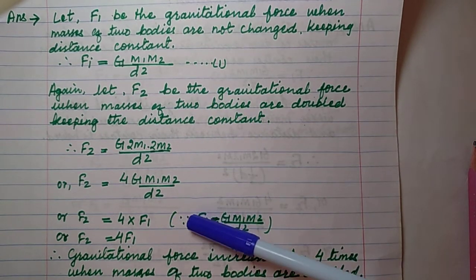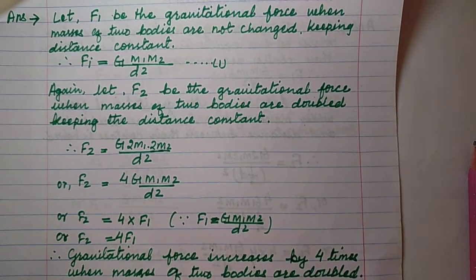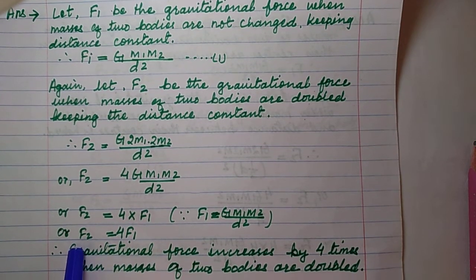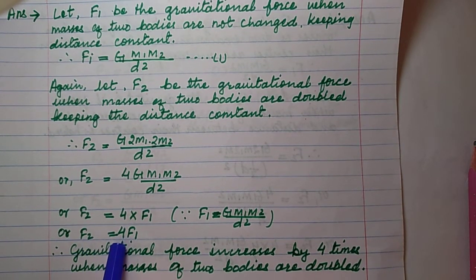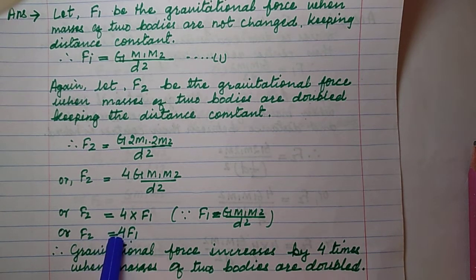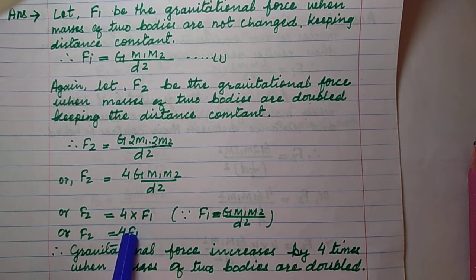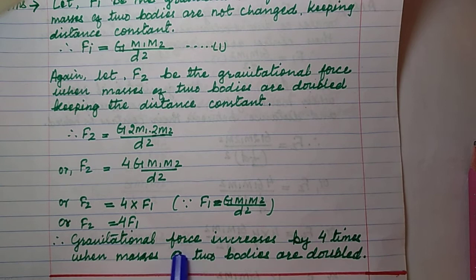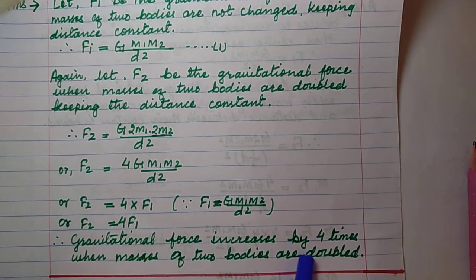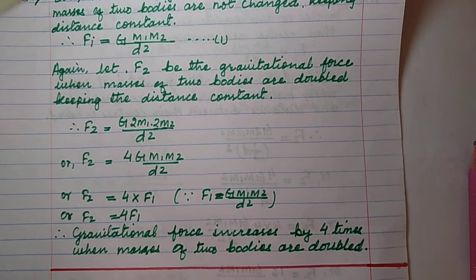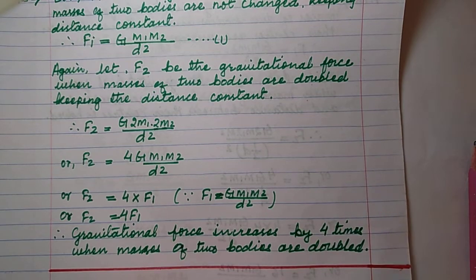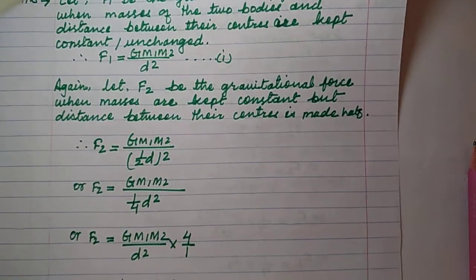From equation 1, F₂ = 4F₁. The new force is increased by 4 times. So gravitational force increases by 4 times when masses of two bodies are doubled keeping the distance constant.